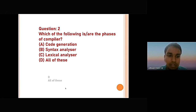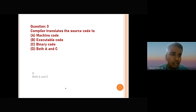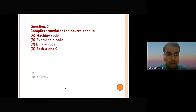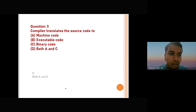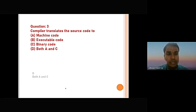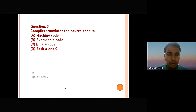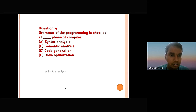The next question is: a compiler translates the source code to — option A: machine code, option B: executable code, option C: binary code, option D: both A and C. As we know, a compiler translates the source code to both machine code and binary code. So the answer will be option D — both A and C.